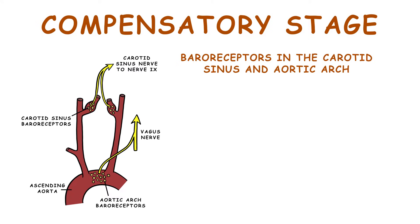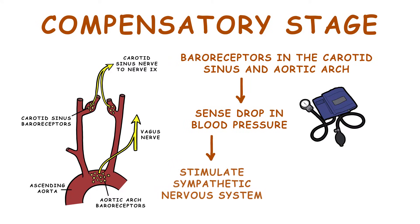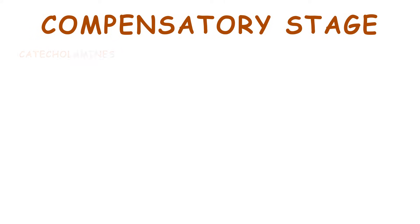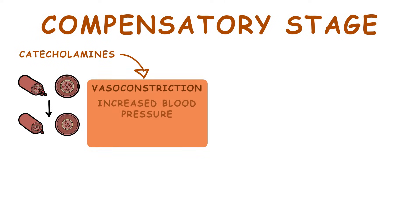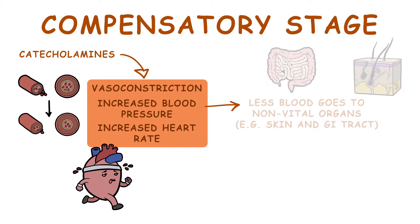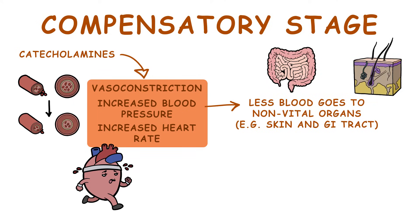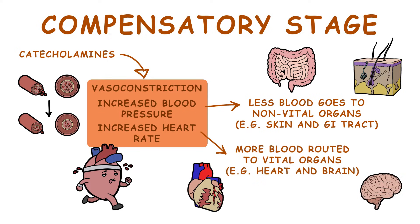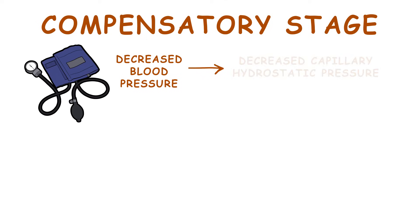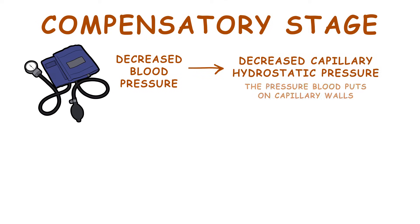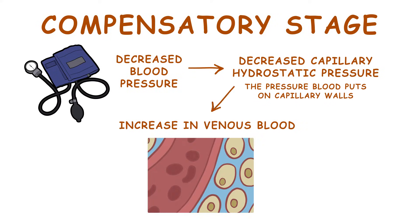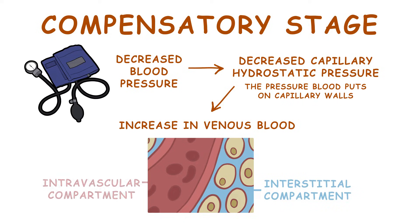Baroreceptors in the carotid sinus and aortic arch sense a drop in blood pressure and stimulate the sympathetic nervous system. The sympathetic nervous system releases catecholamines epinephrine and norepinephrine. These catecholamines cause vasoconstriction, increased blood pressure, and increased heart rate. Less blood goes to the non-vital organs, such as the skin and gastrointestinal tract, while more blood is routed to vital ones like the heart and brain. The drop in blood pressure results in decreased capillary hydrostatic pressure — the pressure blood puts on capillary walls — triggering an increase in venous blood by shifting fluid from the interstitial compartment to the intravascular compartment.